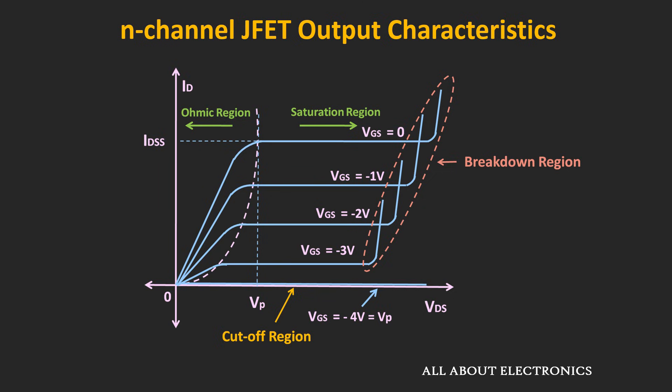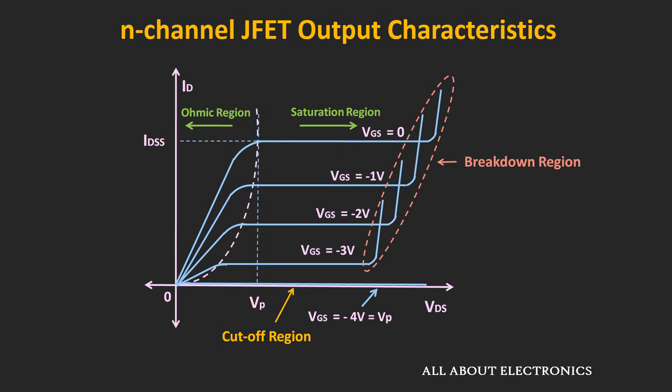As you can see from the graph, as the value of Vgs changes, then the drain current Id will change. Now let's find out the relationship between the input voltage Vgs and the output drain current Id. If we plot this relationship, then it is known as the transfer characteristic. Basically, this transfer characteristic is the plot which defines the relationship between the input and the output quantity of the device. And it could be either voltage or current.